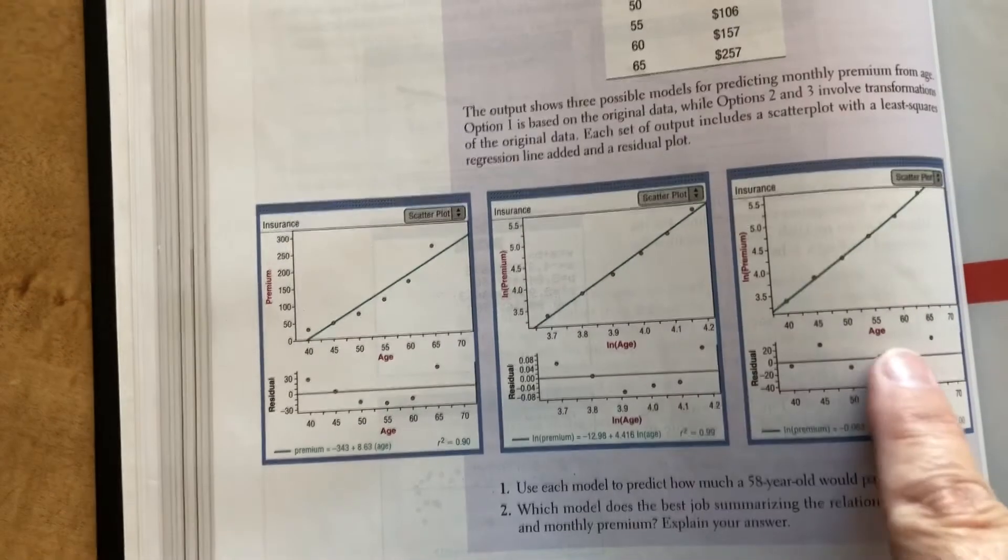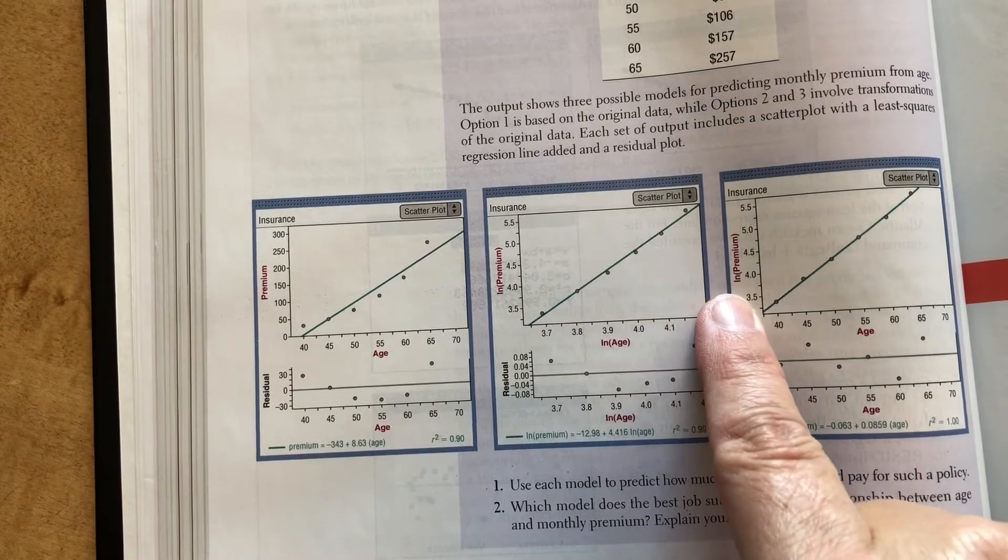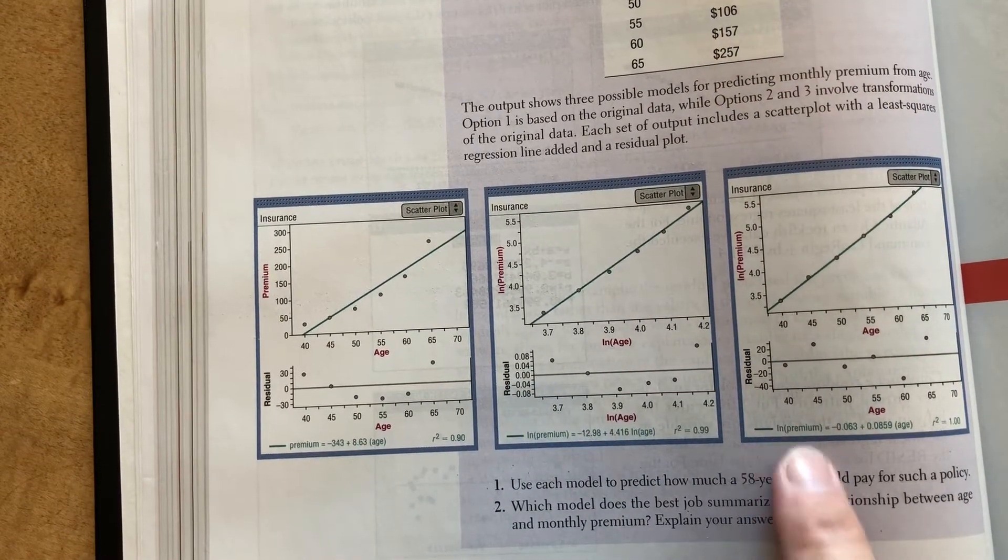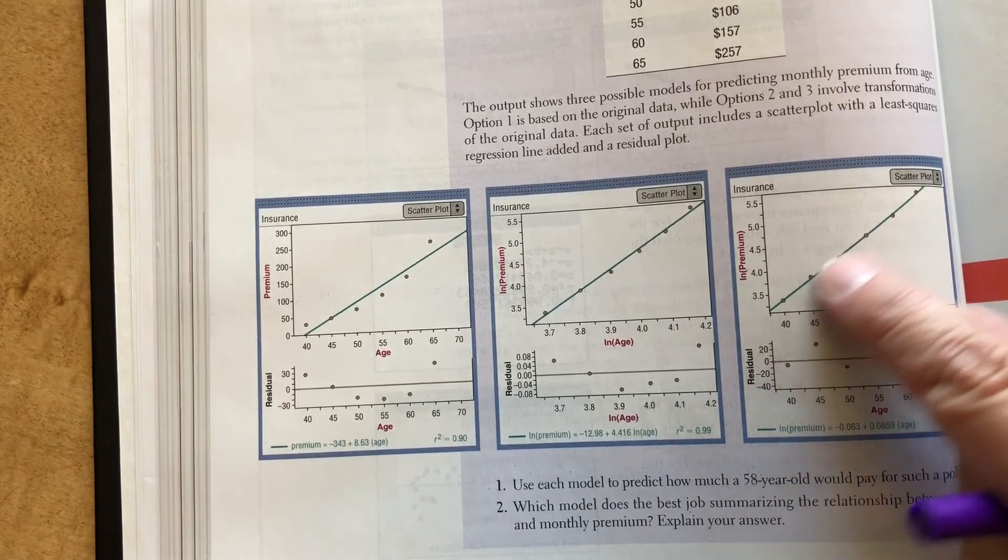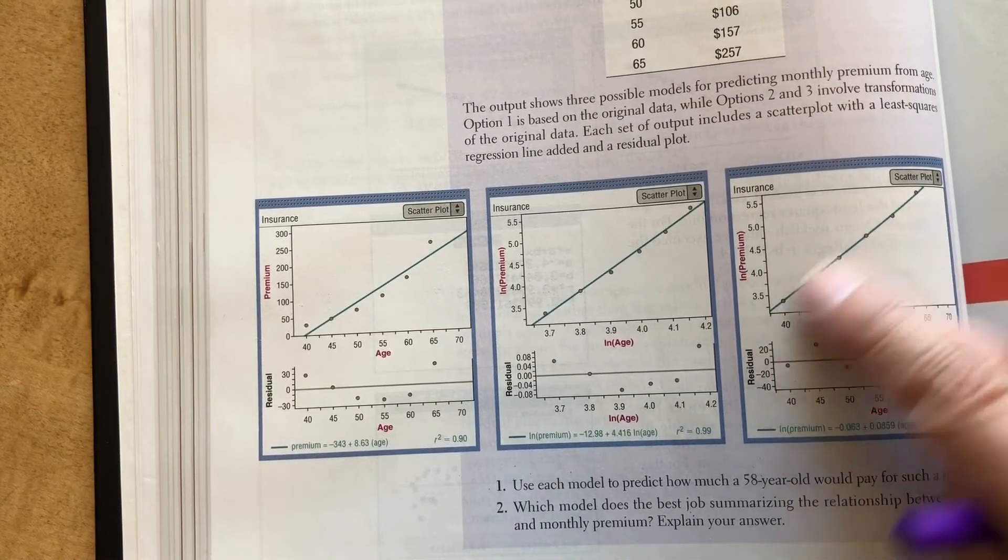The third option, let's see. We took age against the natural log of the premium. So in our least squared regression line, we only have to natural log premium. Now this data is much straighter. Oh my gosh, it's very straight.